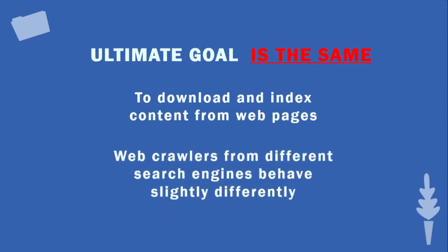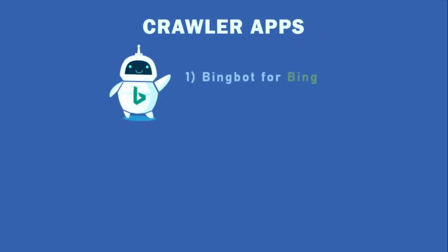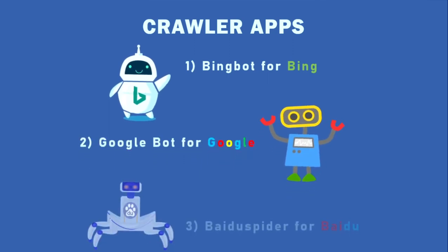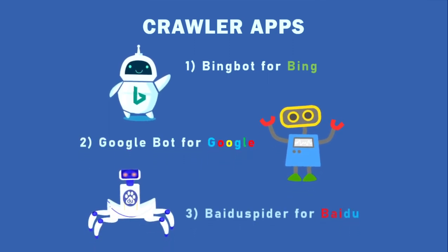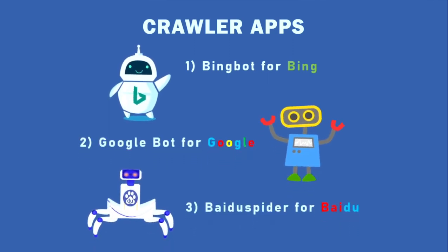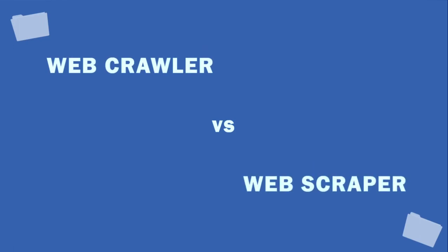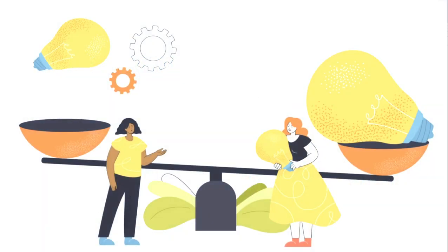Although the ultimate goal is the same — to download and index content from web pages — web crawlers from different search engines behave slightly differently. Examples: each search engine has its own crawler: Bingbot for Bing, Googlebot for Google, and Baiduspider for Baidu.